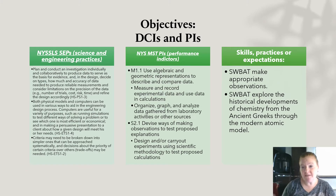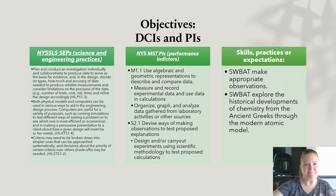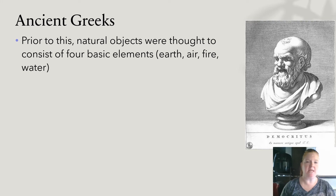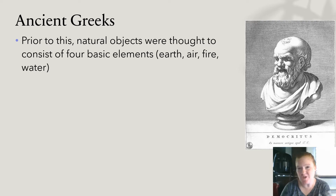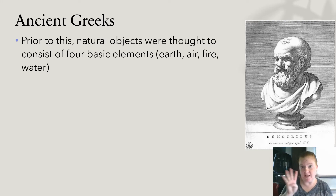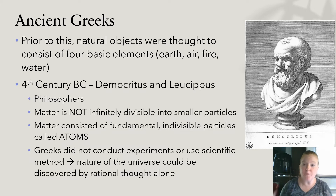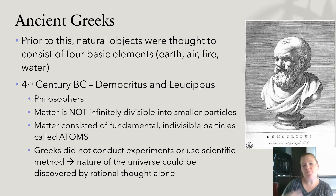Here are the objectives — pause and peruse if you desire. So again, we're going to start with the ancient Greeks. Prior to the ancient Greeks, natural objects were thought to consist of four basic elements: earth, air, fire, and water. The Greeks expanded on this and said that's not actually the way it is.